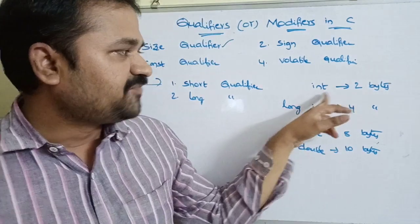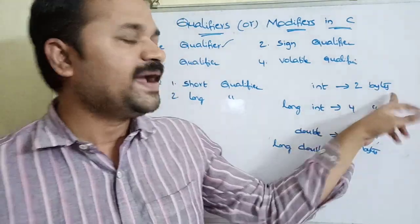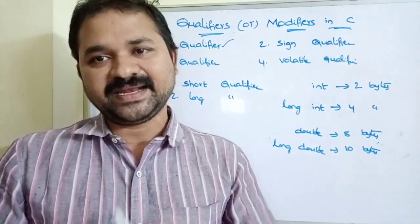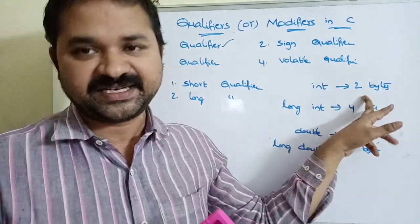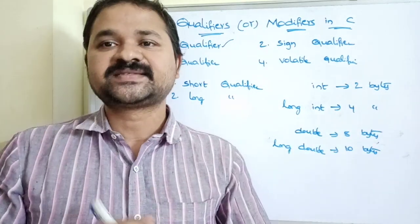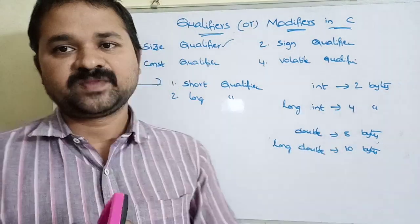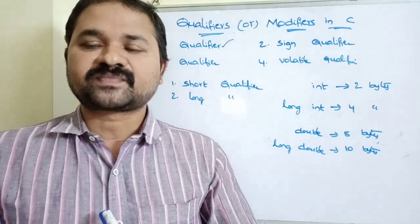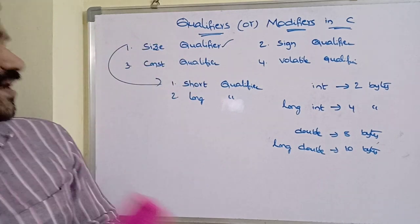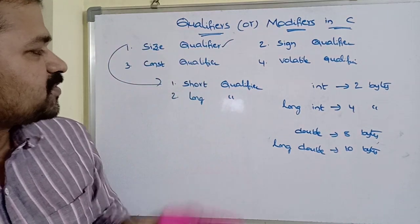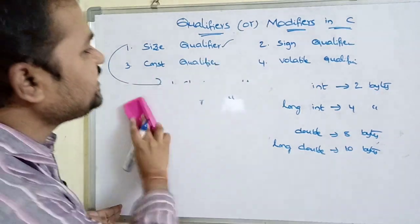If the size of an integer is two bytes, then the size of a short int may be one or two bytes — that depends upon the compiler. If you take Turbo C, then the size of short int is two bytes, whereas in Linux with some editor like vi, the size of short int is one byte. So the short qualifier decreases or keeps the size the same. That is about the size qualifier — short and long.